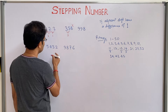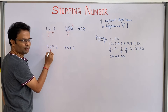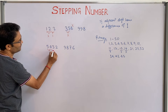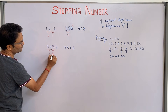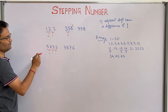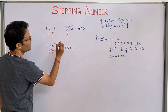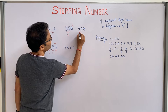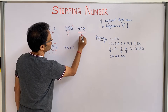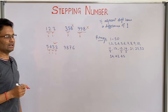If you see 5432: the difference of 5 and 4 is 1, 4 and 3 is 1, and 3 and 2 is 1. So 5432 is a stepping number. But if you see 99, the difference between 9 and 9 is 0, so that is not a stepping number.